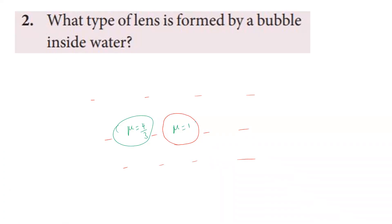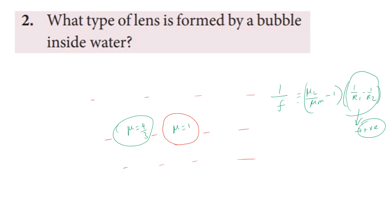The air bubble has a convex surface. Using the lens formula: 1 by f equals mu_lens by mu_medium minus 1, into 1 by R1 minus 1 by R2. For a convex surface, 1 by R1 minus 1 by R2 is positive. However, mu_lens is 1 and mu_medium is 4 by 3, so mu_lens divided by mu_medium is less than 1.